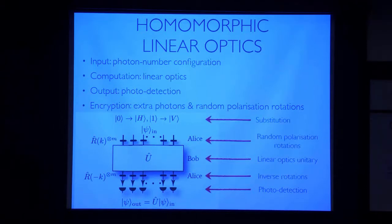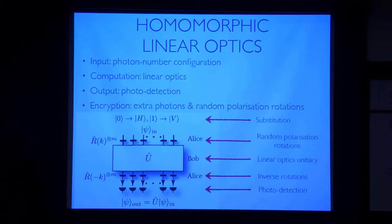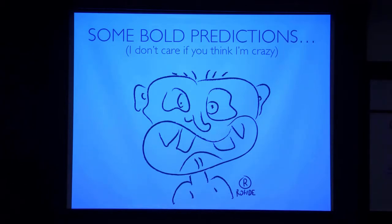Here's the procedure: substitution, random polarization rotations, linear optics unitary, inverse rotations, photo detection — and Alice gets the output state. So we now know that distributed quantum computing is a good thing to do, we know how to do it, and we know how to make it secure.